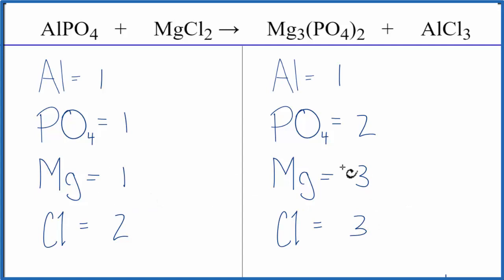Let's balance the magnesiums first. Looks like we could just put a three in front of the magnesium chloride. One times three, that would balance the magnesiums. And then the chlorine, two times the three, that would give us six of those.